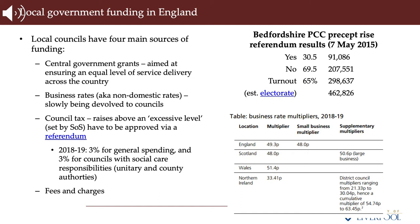For many decades the bulk of councils' income came from a combination of government grants and business rate income, the latter being redistributed by the government to account for need. Because of large reductions in government grants due to austerity since 2010, this is no longer as true. As a general rule, the less deprived an area the less government grant it is likely to receive, because richer areas can raise more funding via council tax and business rates. Since 2010, deprived areas have seen their grants cut more than less deprived areas because they began with bigger grants.